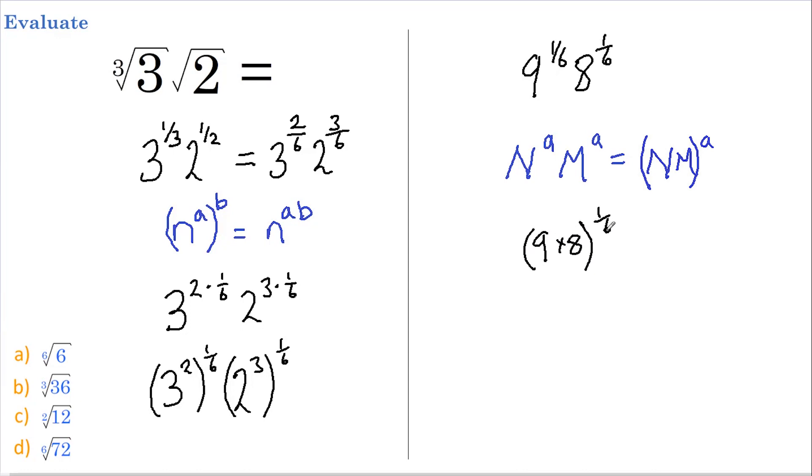So the above simply becomes 9 multiplied by 8, all raised to the power of 1/6, which equals 72 to the power of 1/6, which is of course the same as the sixth root of 72. And that's our answer.